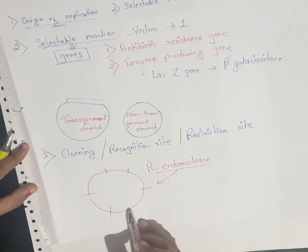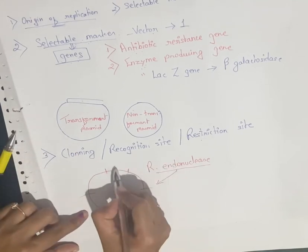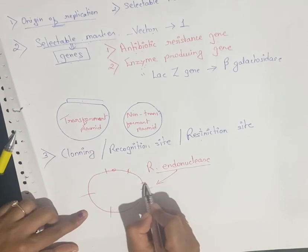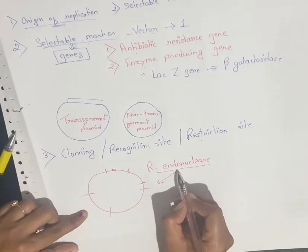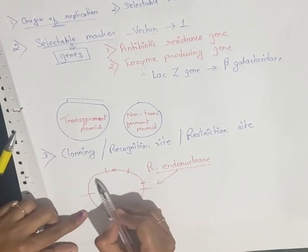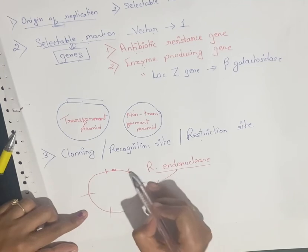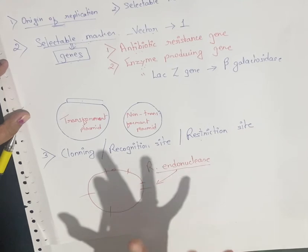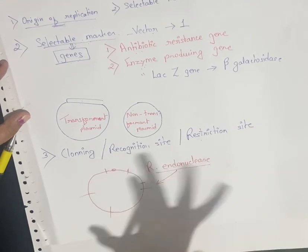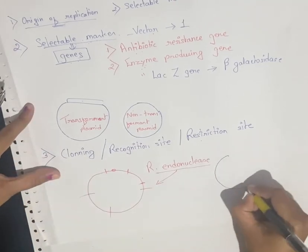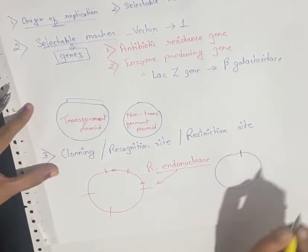If the plasmid is cut at several locations, the origin of replication can be destroyed, and the selectable markers can also be destroyed if those positions are cut. So if there are too many restriction sites, the process of recombinant DNA technology becomes complicated. That is why a plasmid should preferably have only a single restriction site.